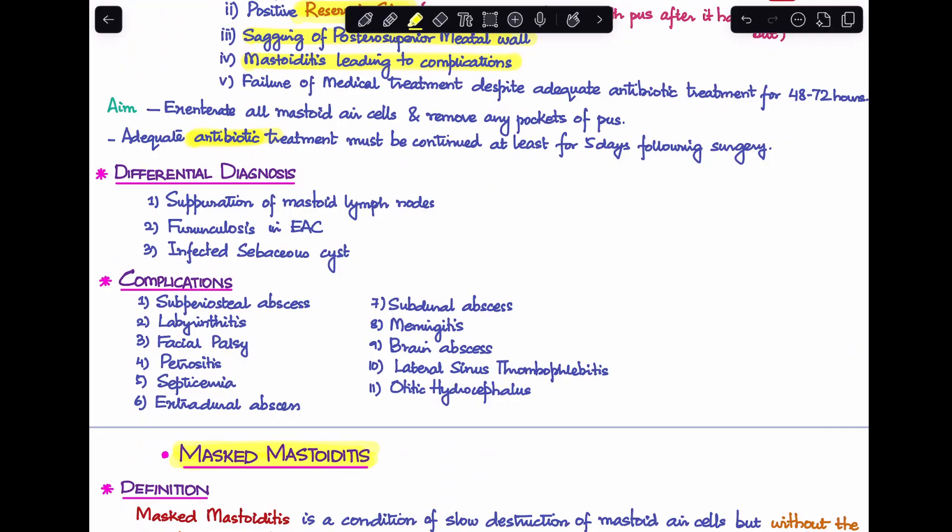What are the differential diagnoses? One is suppuration of mastoid lymph nodes. Second is furunculosis in EAC. I've covered this in a separate video about how to differentiate between mastoiditis and furunculosis. Third is infected sebaceous cyst. Last, complications of acute mastoiditis include all complications of CSOM: subperiosteal abscess, labyrinthitis, facial palsy, petrositis, septicemia, extradural abscess, subdural abscess, meningitis, brain abscess, lateral sinus thrombophlebitis, and otitic hydrocephalus.